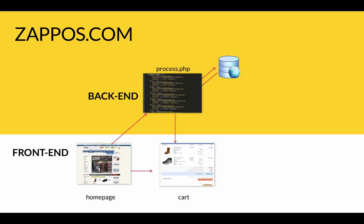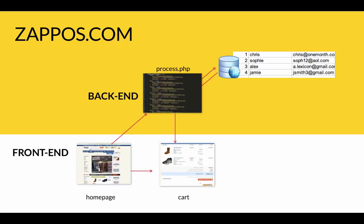A database isn't really anything to worry about — it's really kind of like a glorified Excel sheet. It's columns and rows, some data laid out in there. So this code is saying: hey, look in that database and you see Chris's name in there. The database goes back to the PHP and says, yep, everything's good — send him to the cart, let him ship out, let him get his shoes.